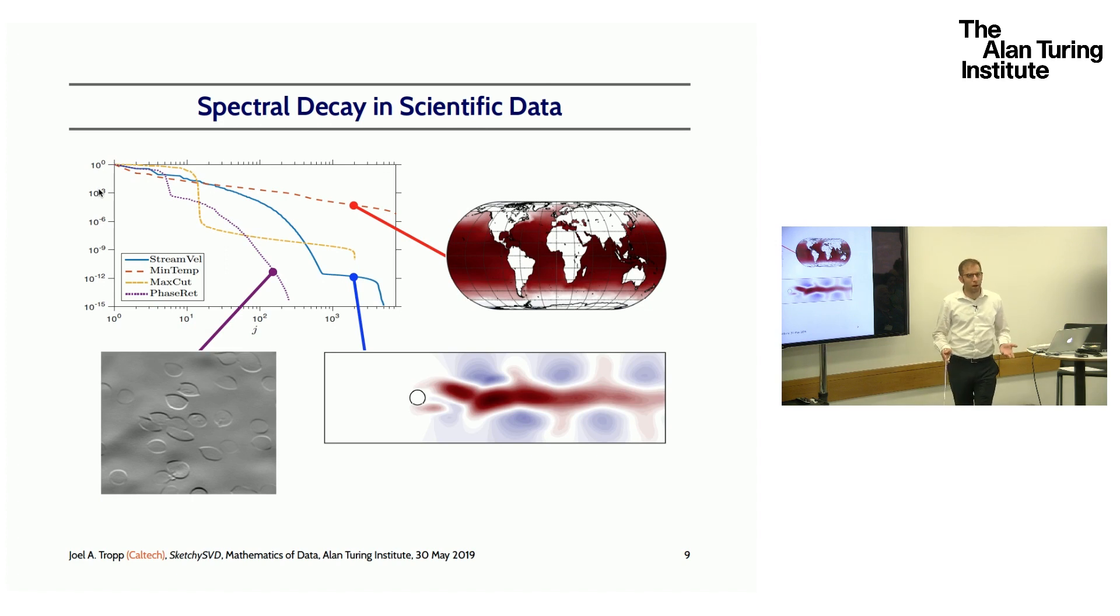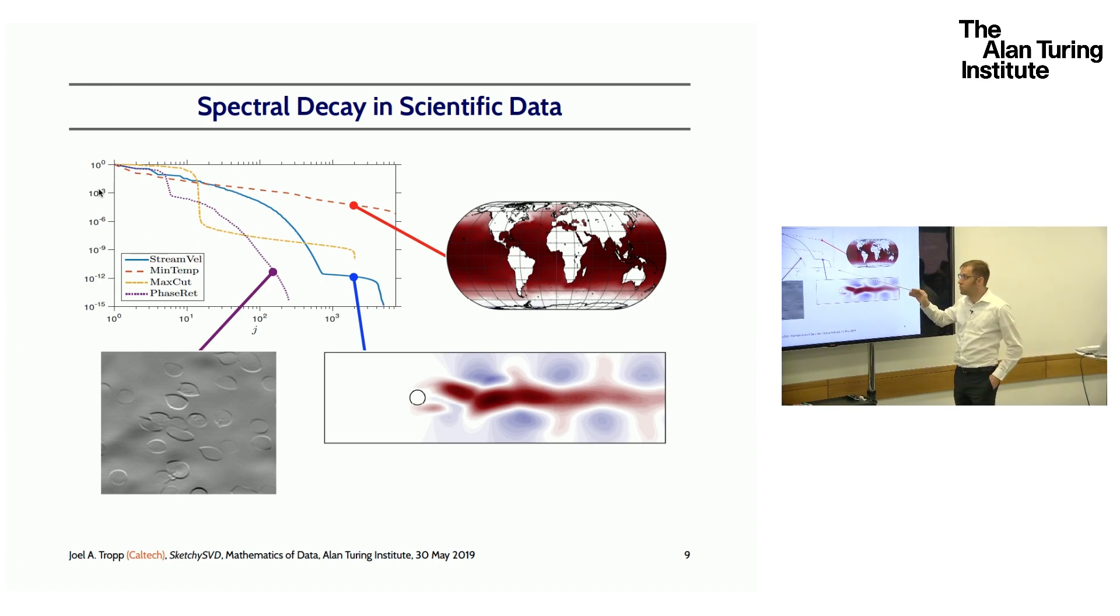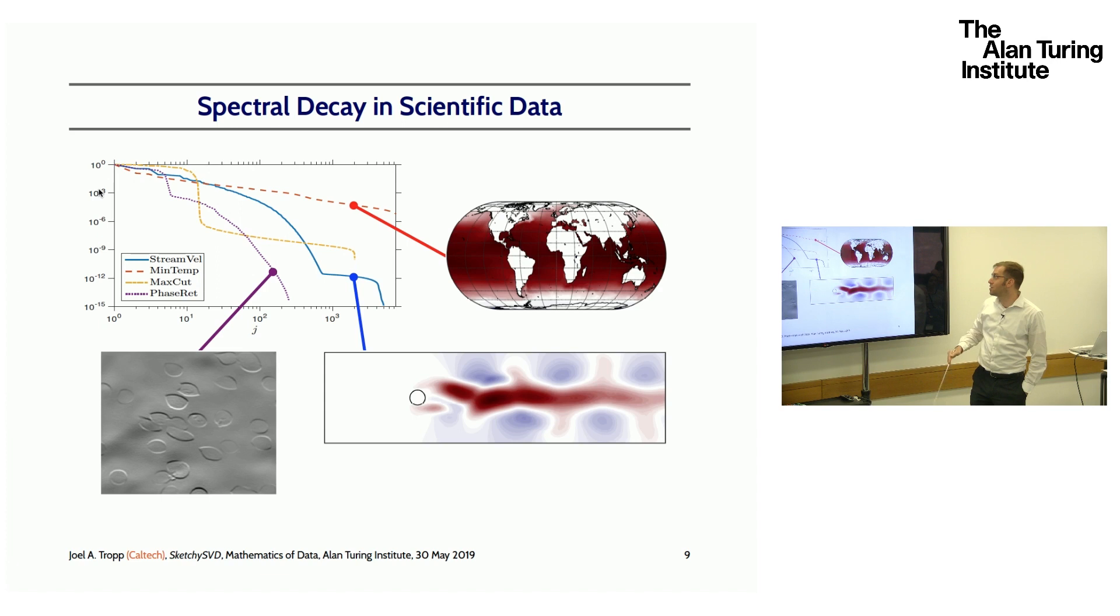What is it about these large matrices can we take advantage of to be able to perform this calculation accurately? The interesting thing is that a lot of scientific data has decay in its singular value spectrum. This plot here on the horizontal axis shows the order of the singular value, the index. On the vertical axis I've marked the size of the singular value. The different curves indicate the spectra of a number of different matrices. I want to point out that this axis is on a log scale, so these numbers are going down fast.